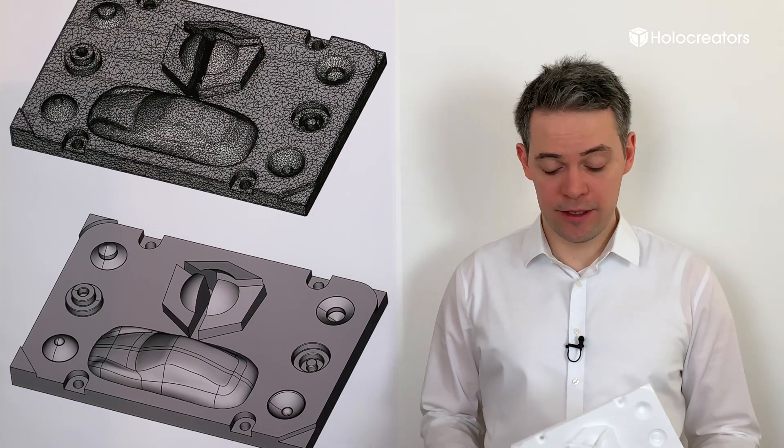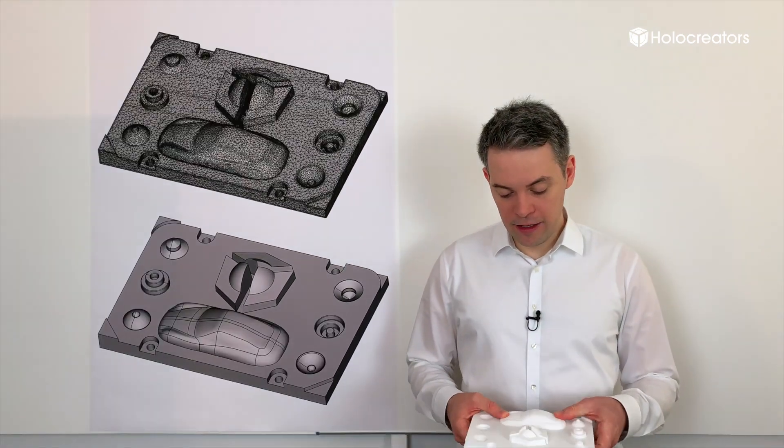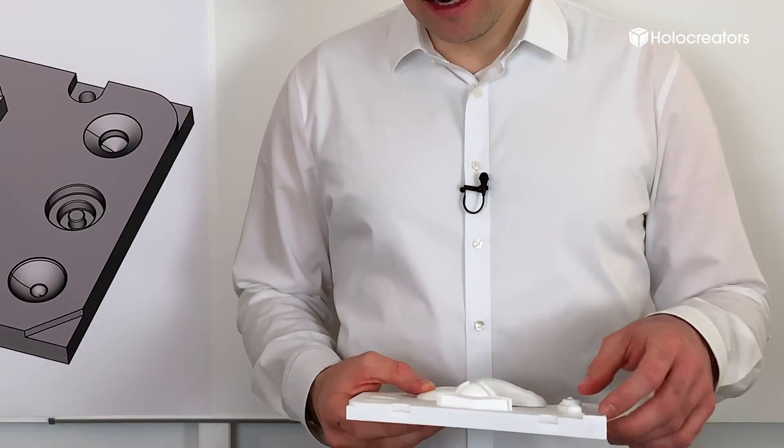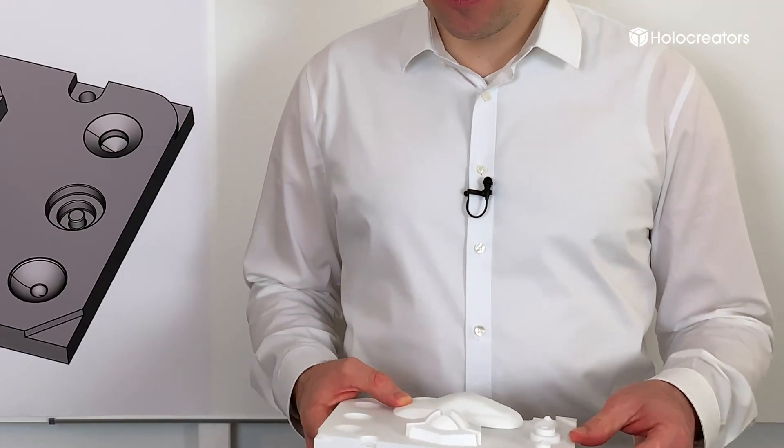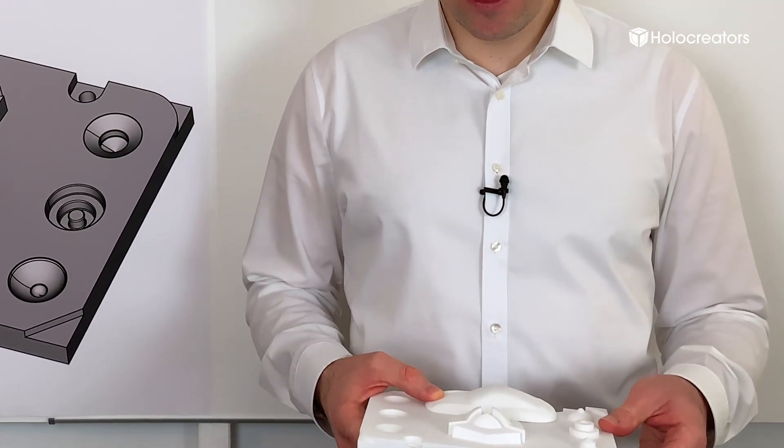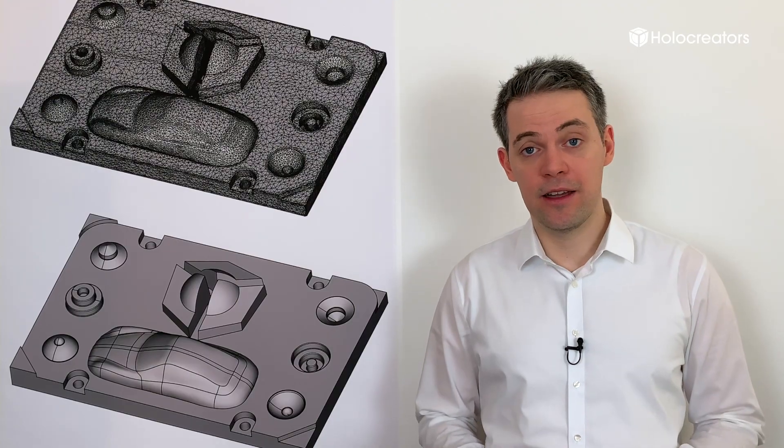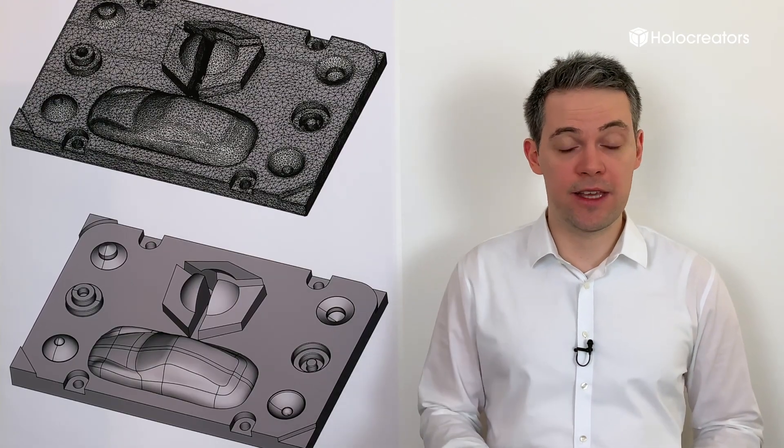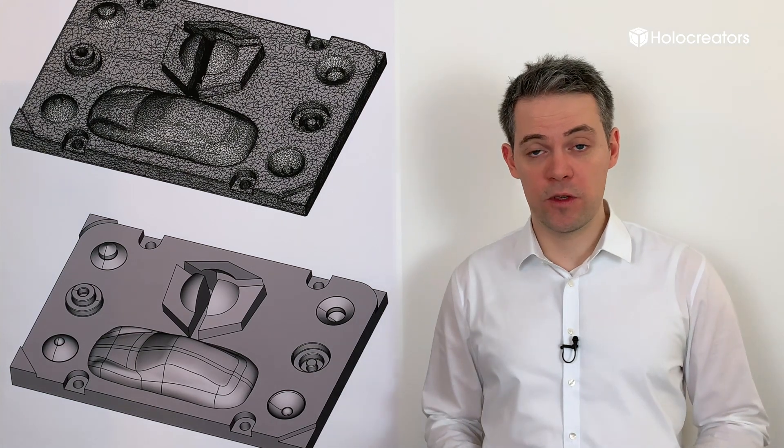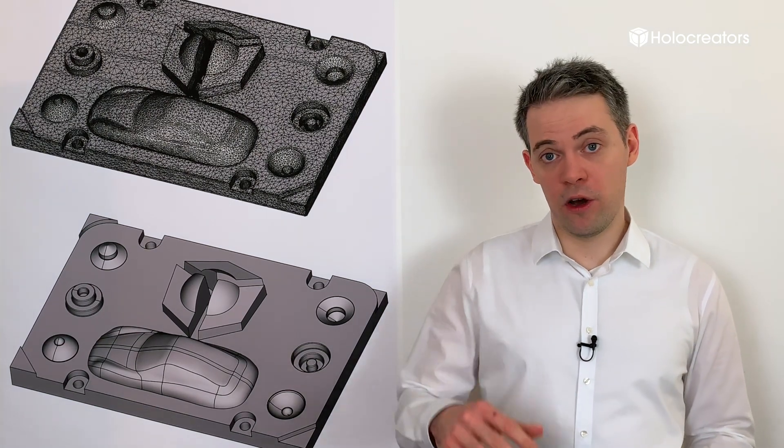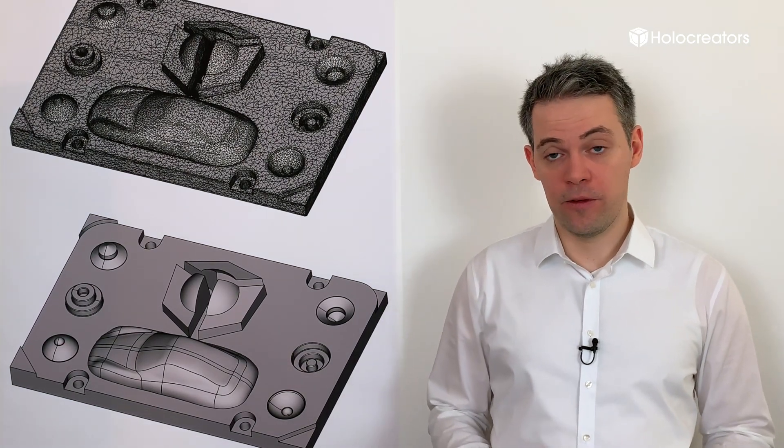After we 3D scanned the part, what you always have in this are manufacturing defects. Especially if it's plastic, there are some deformations. These deformations, we don't compensate them when we do reverse engineering with solid modeling because that would lower the accuracy of the reverse engineering.